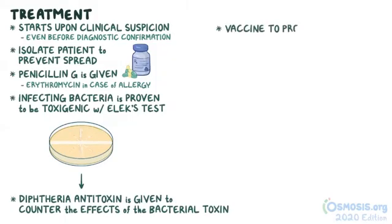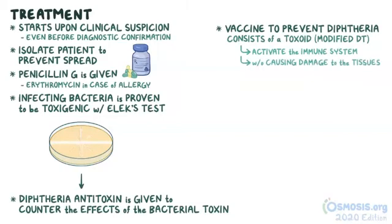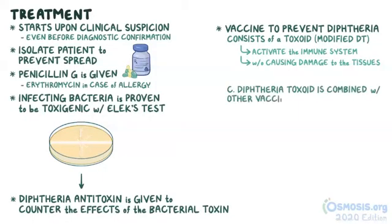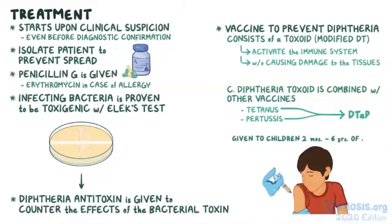Luckily, there's a vaccine to prevent diphtheria. This vaccine consists of a toxoid, which is a modified DT with the ability to activate the immune system and make it ready to tackle a real infection without causing damage to tissues. C. diphtheriae toxoid is usually combined with other vaccines against Clostridium tetani, which causes tetanus, and Bordetella pertussis, which causes whooping cough. Together they're called the DTaP vaccine, given to children between 2 months and 6 years of age.